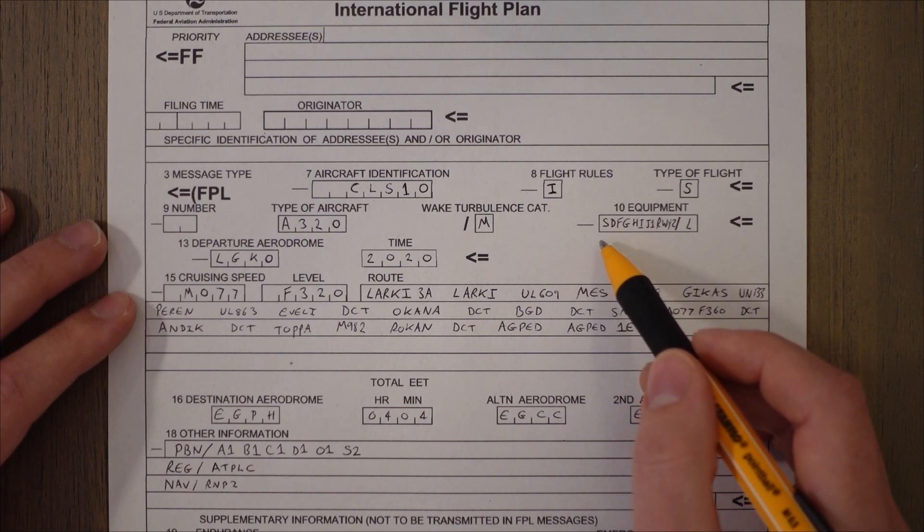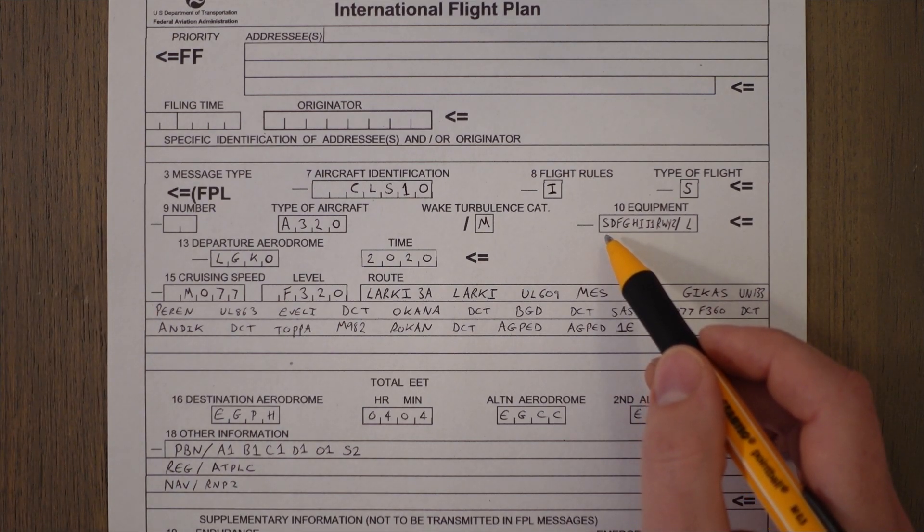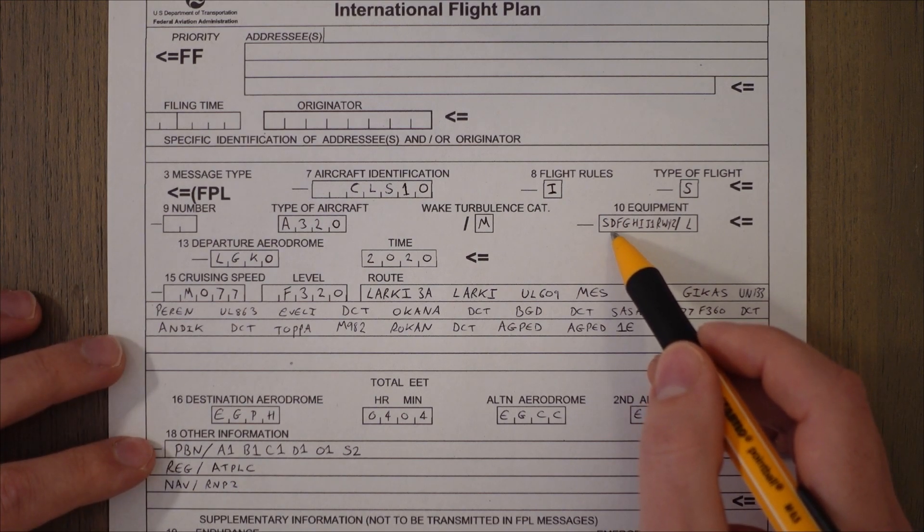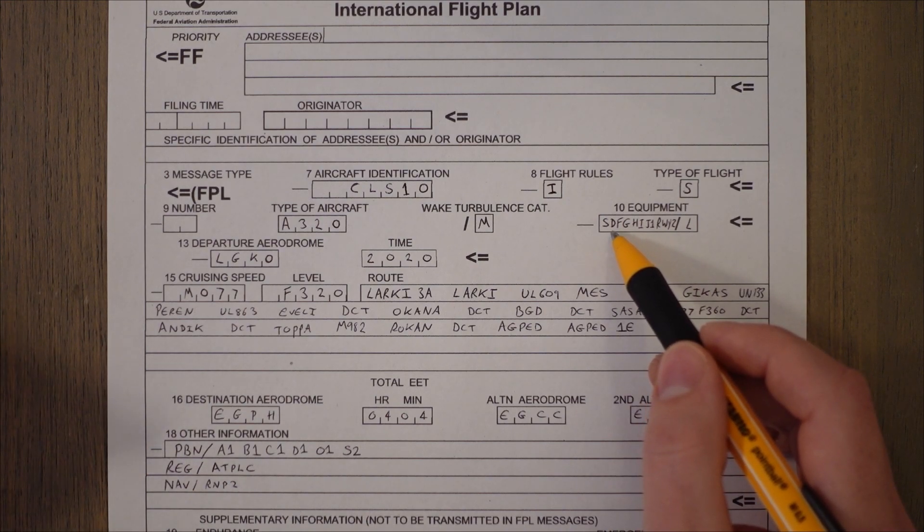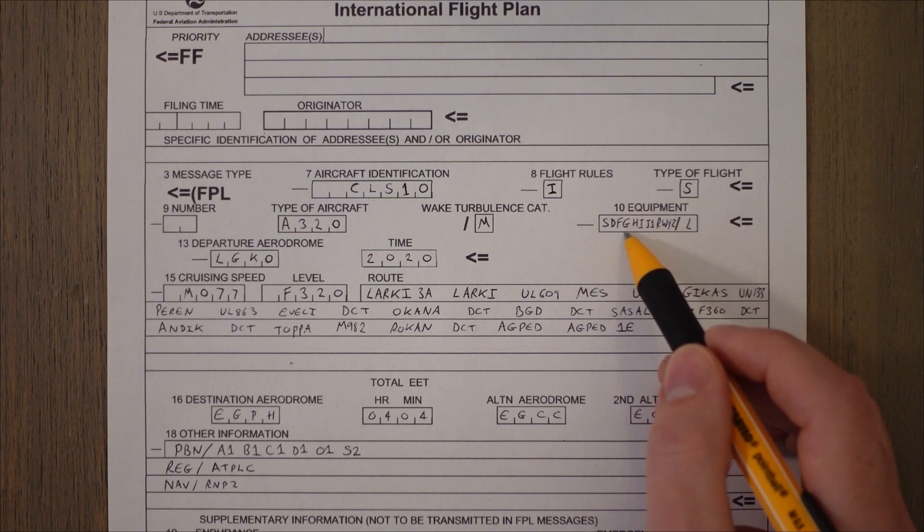So let's just go along. S that indicates that we've got the standard nav equipment and nav and communication equipment, which means we've got a VHF, very high frequency radio, and we've also got the capabilities to follow VORs and fly an ILS. D stands for DME, so we've got the ability to track DMEs.